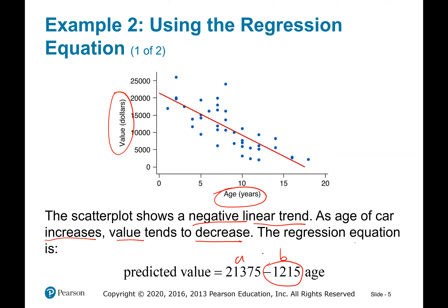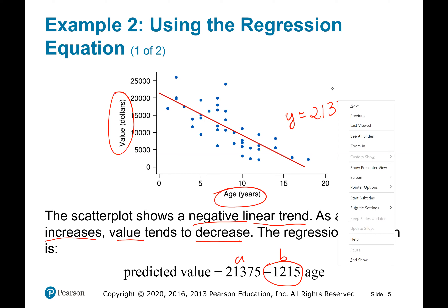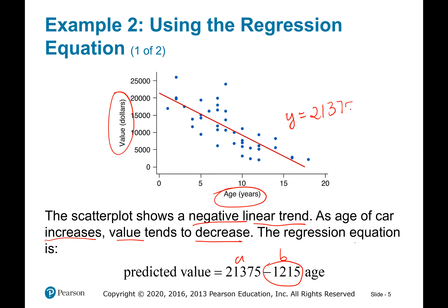So I can write this equation as: Y = 21,375 − 1,215X. That should be the regression equation.